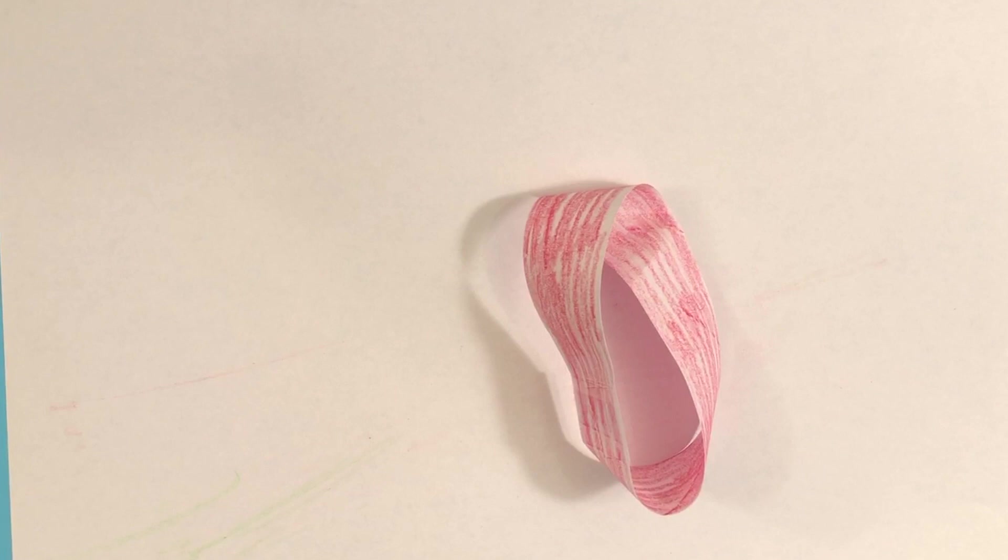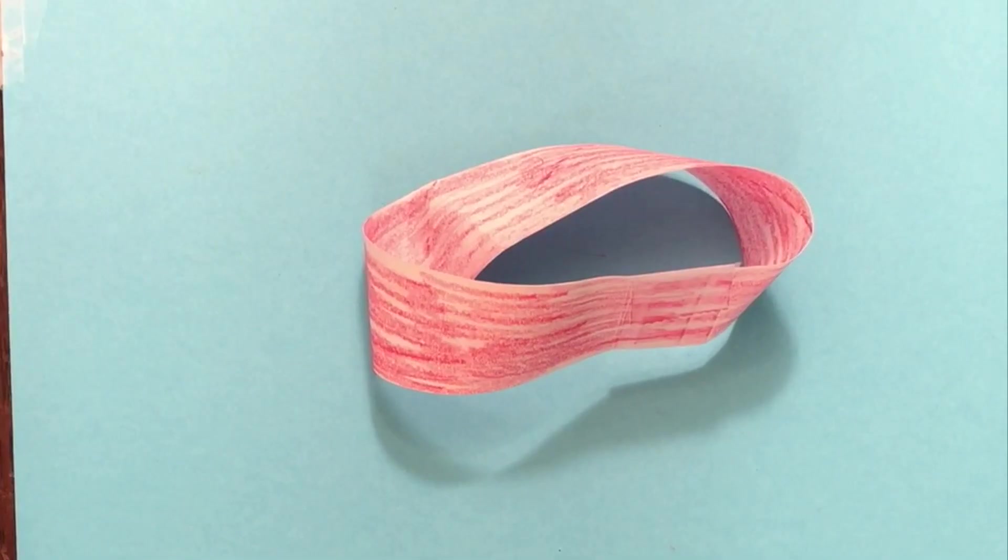If we had a regular piece of paper and said it only has a front, you might think that was crazy. But here it is. By putting that half twist in the paper, we made it have only one side.